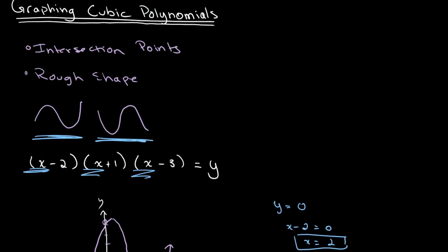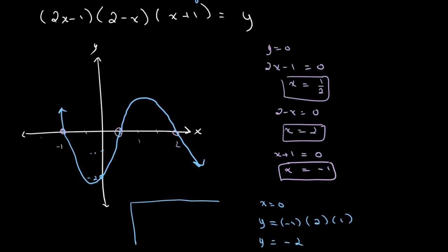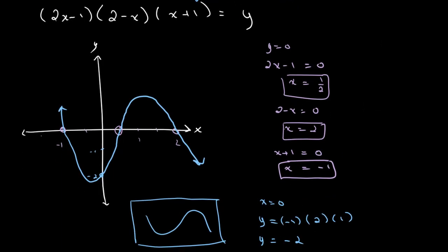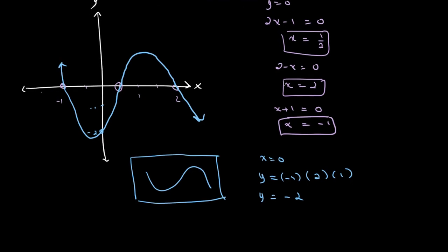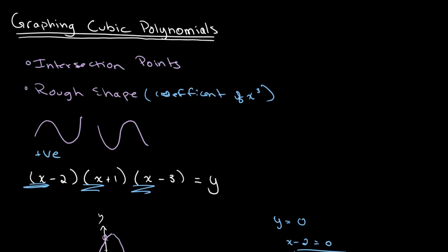When the coefficient of x cubed is positive, we get the first shape. Now looking at our second graph, it follows the inverse shape. In that case, the coefficient of x cubed is negative — because this x is positive, this x is negative (the 2 minus x factor), and this x is positive. Positive times negative times positive gives a negative answer, so the coefficient of x cubed is negative, and we get the second shape.